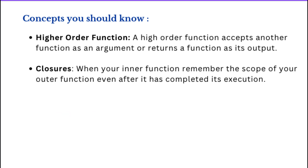A higher order function is basically a function that accepts another function as an argument or returns a function as its output. A closure is a combination of a function wrapped together with a reference to the corresponding state, so the inner function is going to remember the scope of the outer function even after the outer function has completely executed. This is how we hold data in cache, because that data will come from the closure.